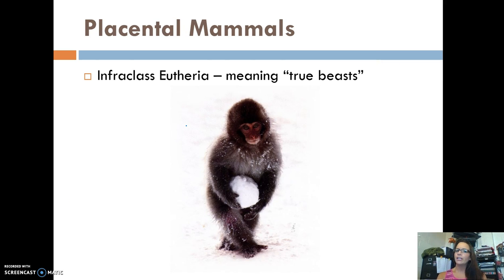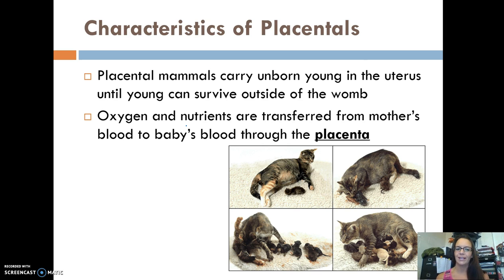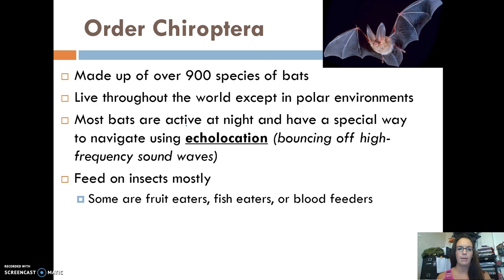Now we're into placental mammals — infraclass Eutheria, which just means 'true beasts.' The typical characteristics of placentals are that they carry unborn young in the uterus until they can survive completely outside the womb, and they have a placenta, which transfers nutrients from the mother's blood to the baby's blood during development.